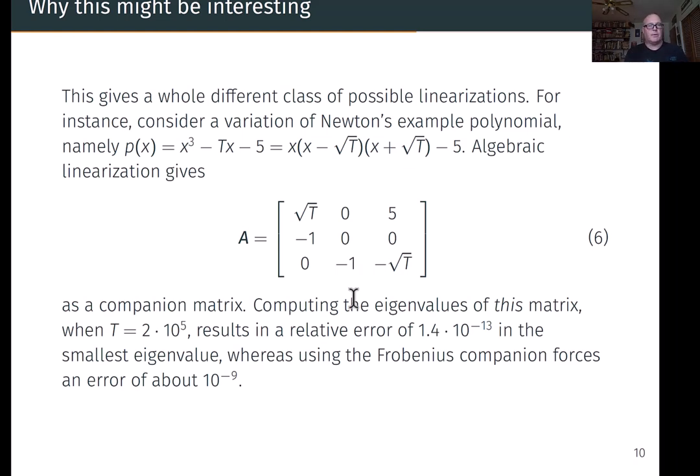If we take this matrix and we compute the eigenvalues when, for instance, t equals 200,000, then we get all of the eigenvalues to relative error of 10 to the minus 13 or better. 1.4 times 10 to the minus 13 or better. The smallest one is the hardest one to compute correctly. But if I just go ahead and use the Frobenius companion of the original thing, so 5, t, 0, and the ones in the normal place, then the Frobenius companion matrix has a relative error of about 10 to the minus 9 in the smallest eigenvalue. So much worse.